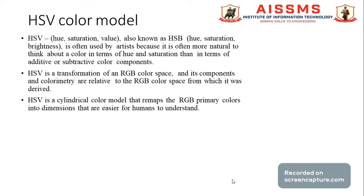HSV stands for Hue, Saturation, and Value — also known by the acronym HSB, meaning Hue, Saturation, and Brightness. It is often used by artists because it is more natural to think about color in terms of hue and saturation than in terms of additive and subtractive color components. HSV is a transformation of the RGB color space, and its components are relative to the RGB color space from which it was derived.